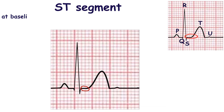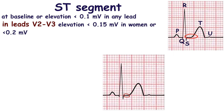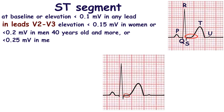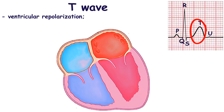The ST segment in healthy people may be at the baseline or have some elevation no more than 0.1 mV in any lead, except leads V2 to V3 where it may be elevated by less than 0.15 mV in women and 0.2 mV in men 40 years old and more. Downsloping or horizontal ST segment depression less than 0.05 mV is considered normal, as well as upsloping ST segment depression.